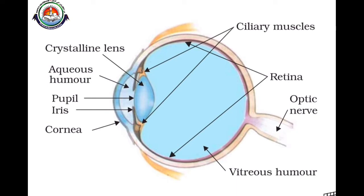The second part is the cornea — a thin membrane covering the surface of the eye, through which light enters into the eye. It acts as a primary lens.